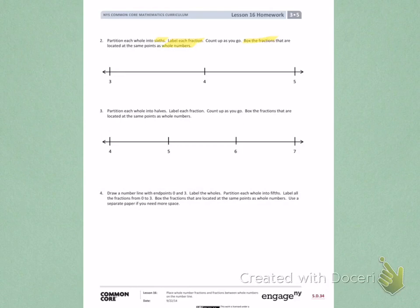So between the 3 and the 4, I need to partition into sixths. I'm going to start by partitioning into thirds, and then breaking those into sixths.